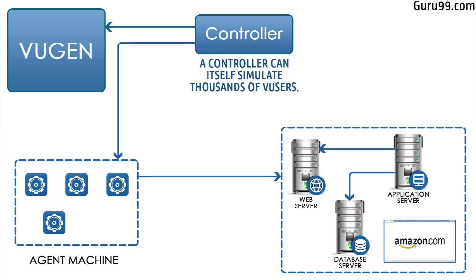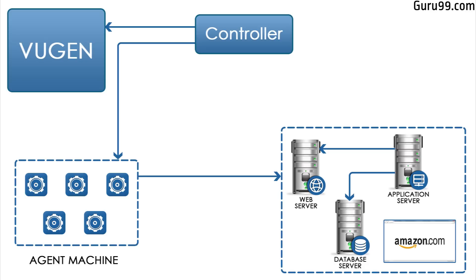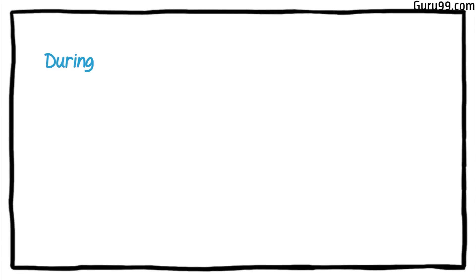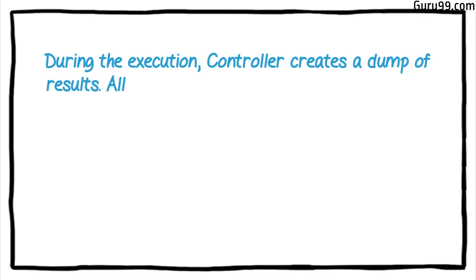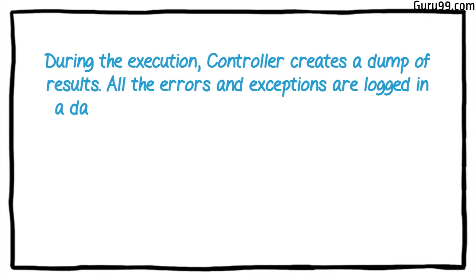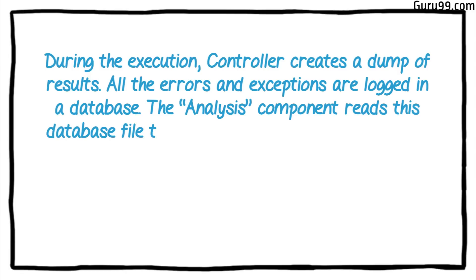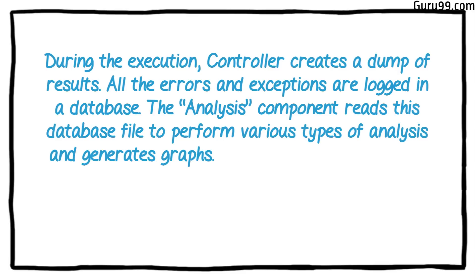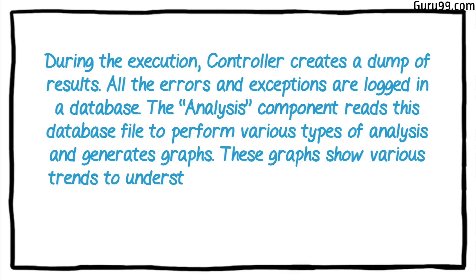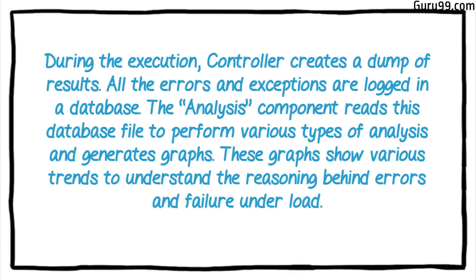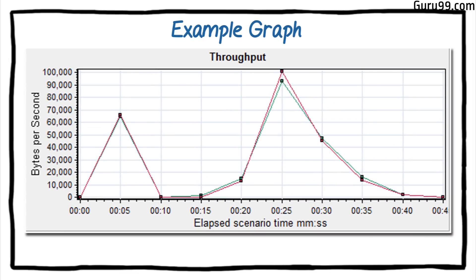Load generators are nothing but high-config machines. The number and configuration of these load generators depends on the number of VUsers and the protocol being tested. For example, if one load generator can simulate 1,000 VUsers, we will need 5 machines. Once load scenarios have been executed, the role of the analysis component comes in. During the execution, the controller creates a dump of results and all errors and exceptions are logged in a database. The analysis component reads the database file to perform various types of analysis and generates graphs showing trends to understand the reasoning behind errors and failures under load, helping determine whether optimization is required in the system under load.